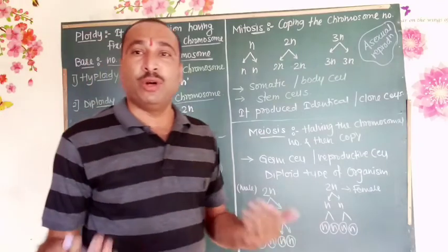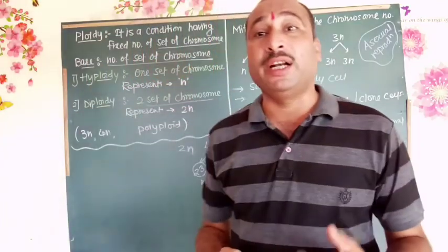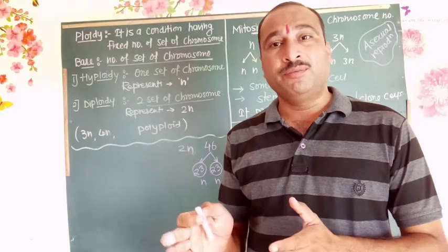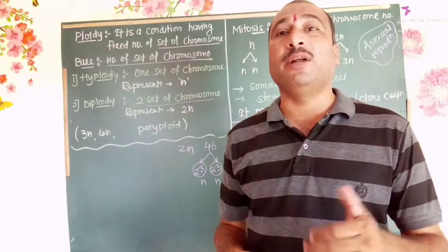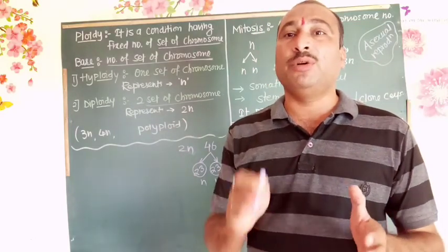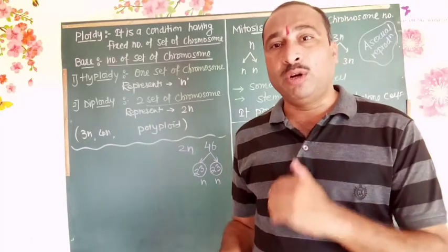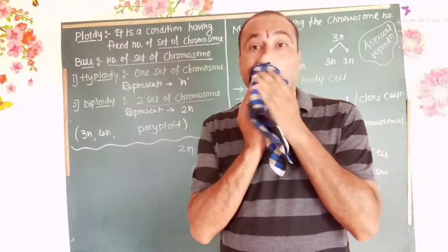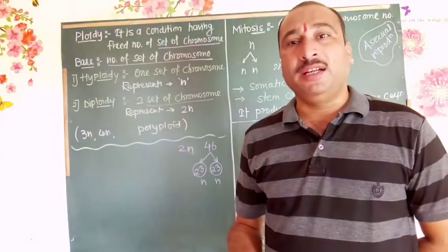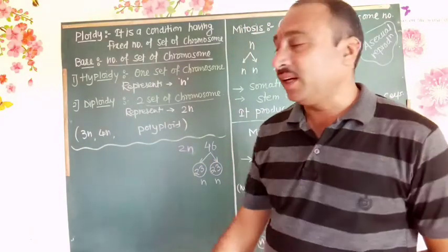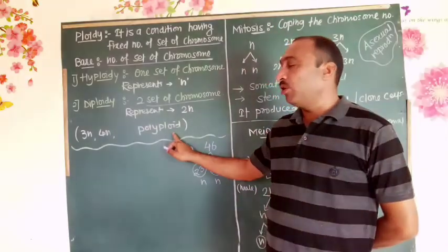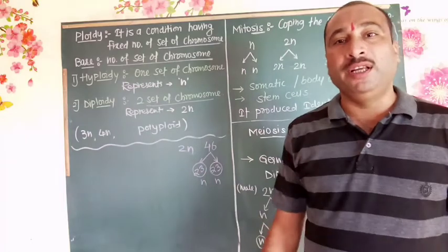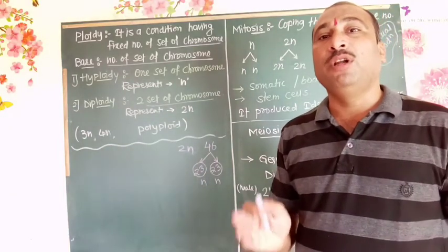If there are 3 sets, then it is triploid, and the condition is triploidy. The cell or organism is called triploid. If there are 4 sets, then it is tetraploidy, and the cell or organism is called tetraploid. If there are 5 or more sets, it is called polyploid, and the condition is called polyploidy.